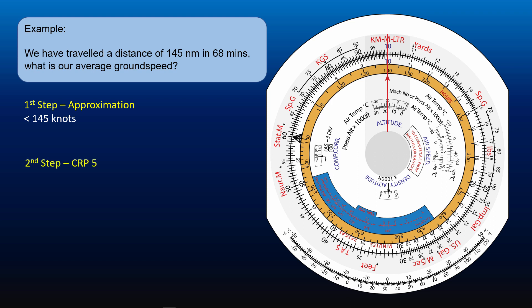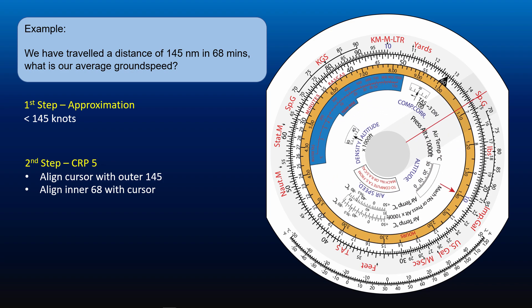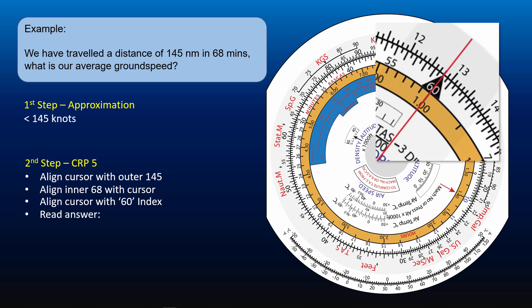Next, we will use CRP5 to get the answer. Align the cursor with 145 on the outer scale. Align 68 on the inner scale with the cursor. Next, align the cursor with the 60 index on the inner scale. Now read the average ground speed on the outer scale opposite to 60 index on the inner scale. 128 knots.